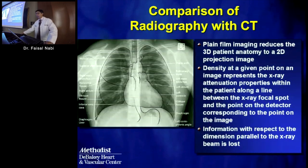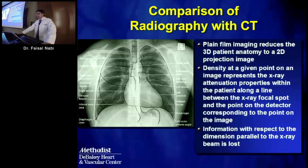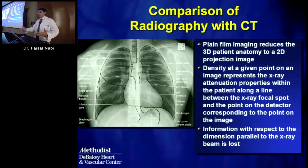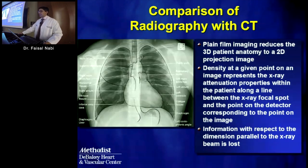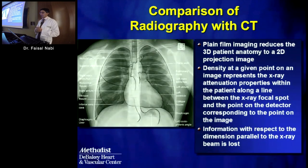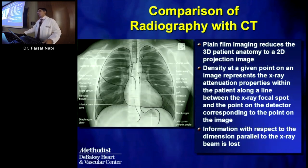First, we compare CT to radiography. With a classic two-dimensional x-ray, you have different densities superimposed upon each other. The human body is a 3D structure, and with a 2D plane film, you're compressing that 3D structure into a 2D image. What you're actually seeing for each density in the image is really the accumulation of all structures above and beyond that point.